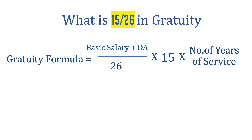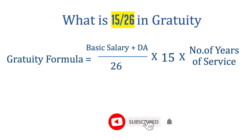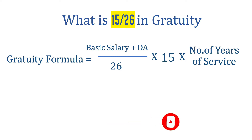The formula of Gratuity Calculation is: basic salary plus dearness allowances, divided by 26, multiplied by 15, multiplied by number of years of service.